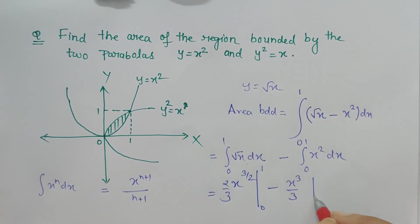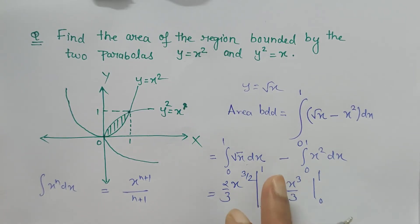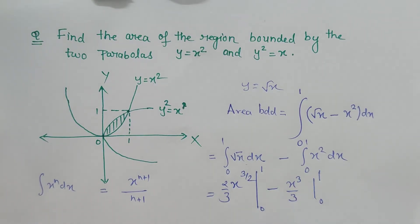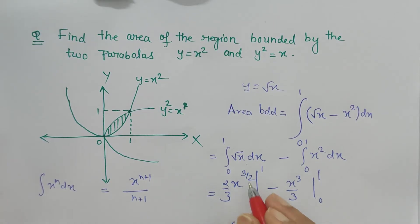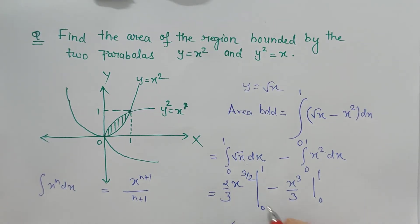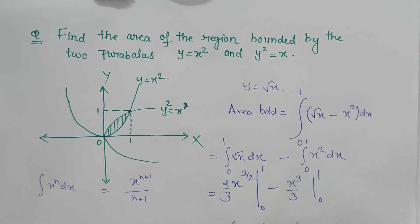Now we will apply the second fundamental theorem of calculus: upper limit minus lower limit. We get 2/3, and when we put upper limit 1 we get 1, when we put lower limit 0 we get 0, minus here also upper limit gives 1 and lower limit gives 0.